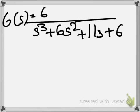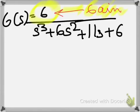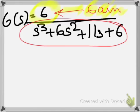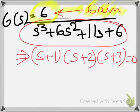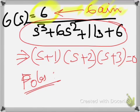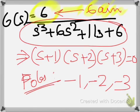The 6 in the numerator is the gain of the transfer function. Now solving the denominator equation s³ + 6s² + 11s + 6 = 0, we can factor this as (s + 1)(s + 2)(s + 3) = 0. So the poles of this transfer function are -1, -2, and -3.